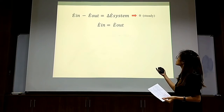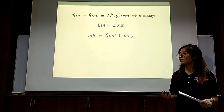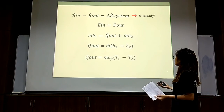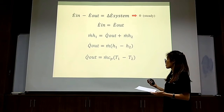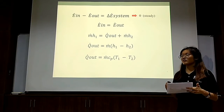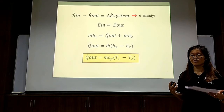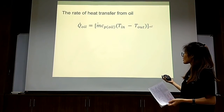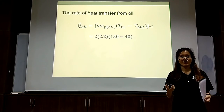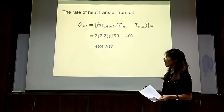The energy balance for this steady flow system is expressed as follows. The rate of change in the system equals zero because it is a steady flow. Therefore, the rate of energy flowing in equals the rate of energy flowing out. Arranging the equation, enthalpy H equals specific heat times temperature, giving us the rate of heat transfer Q equals mass flow rate times specific heat times change in temperature. Substituting the oil data, the rate of heat transfer is found to be 484 kW.